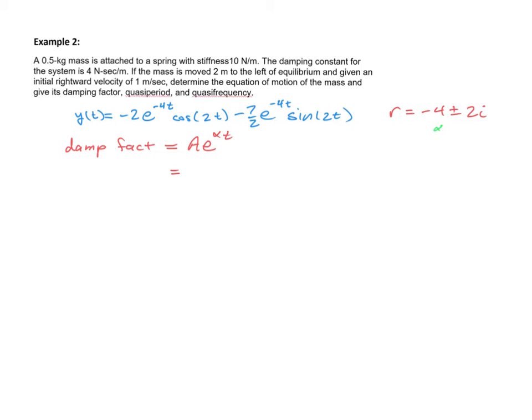According to our formula, A equals the square root of C1 squared plus C2 squared. This is going to be equal to the square root of negative 2 squared plus negative 7 halves squared. That's the square root of 4 plus 49 fourths, which is the sum of 16 and 49 over 4. So that's the square root of 65 over 4, or the square root of 65 over 2.